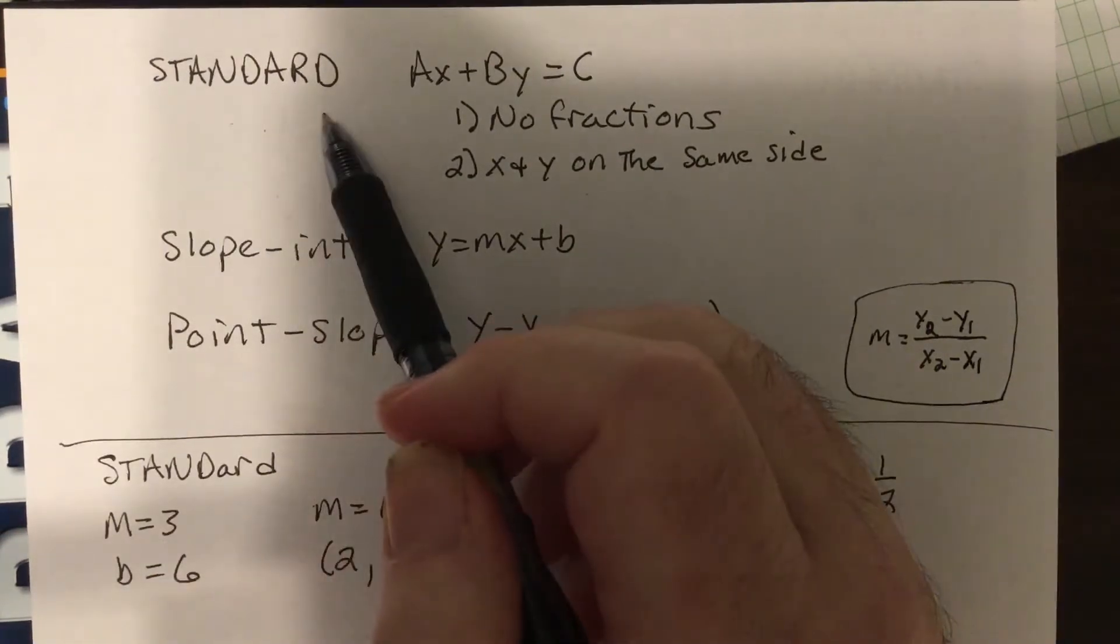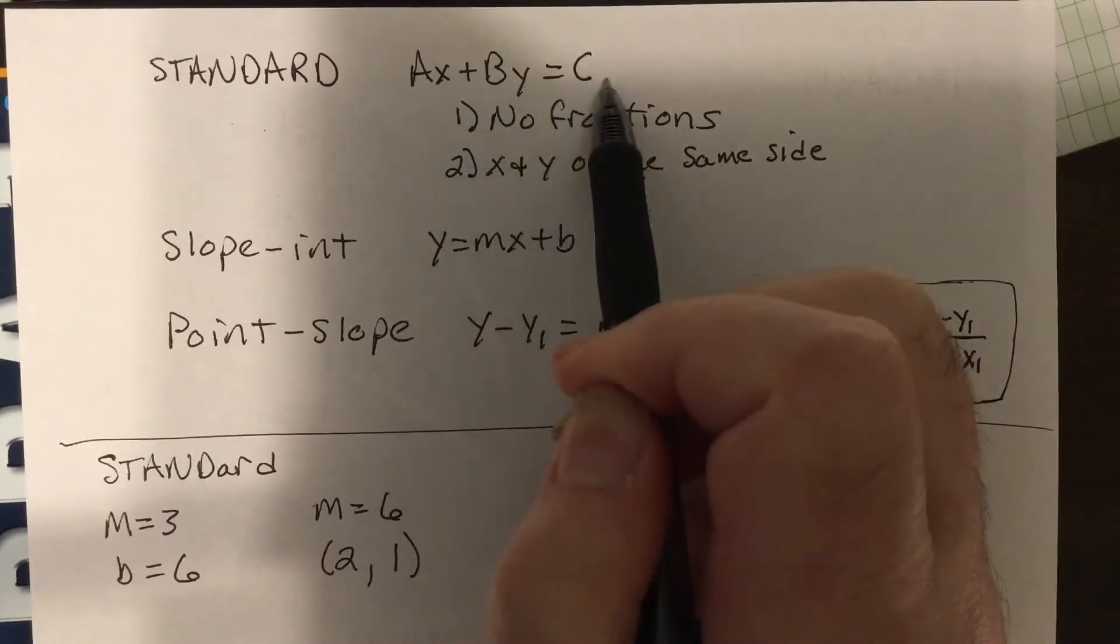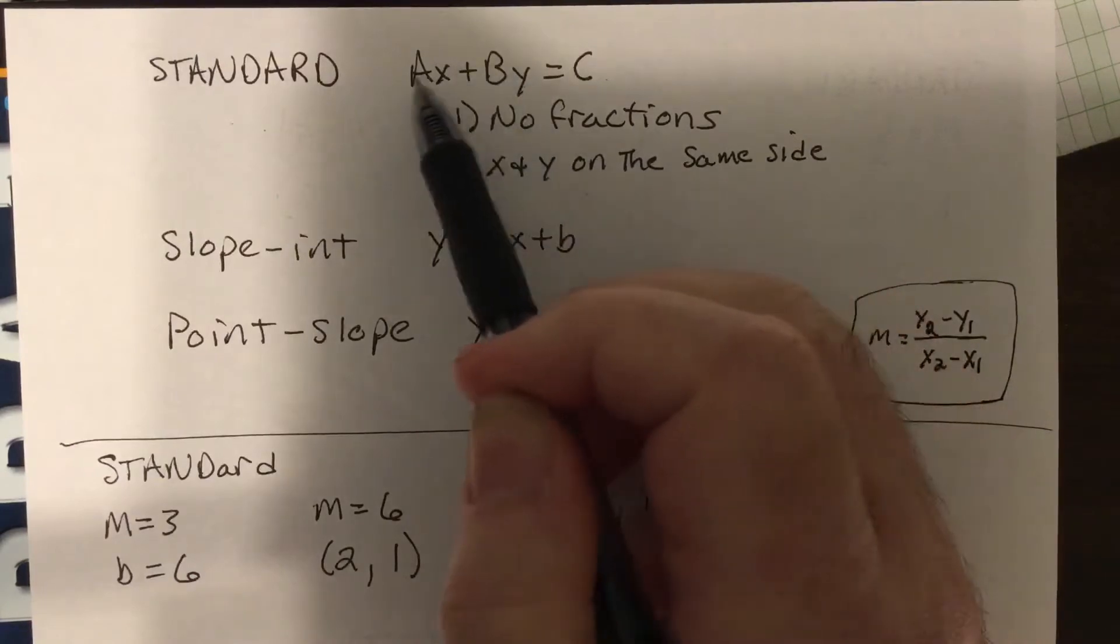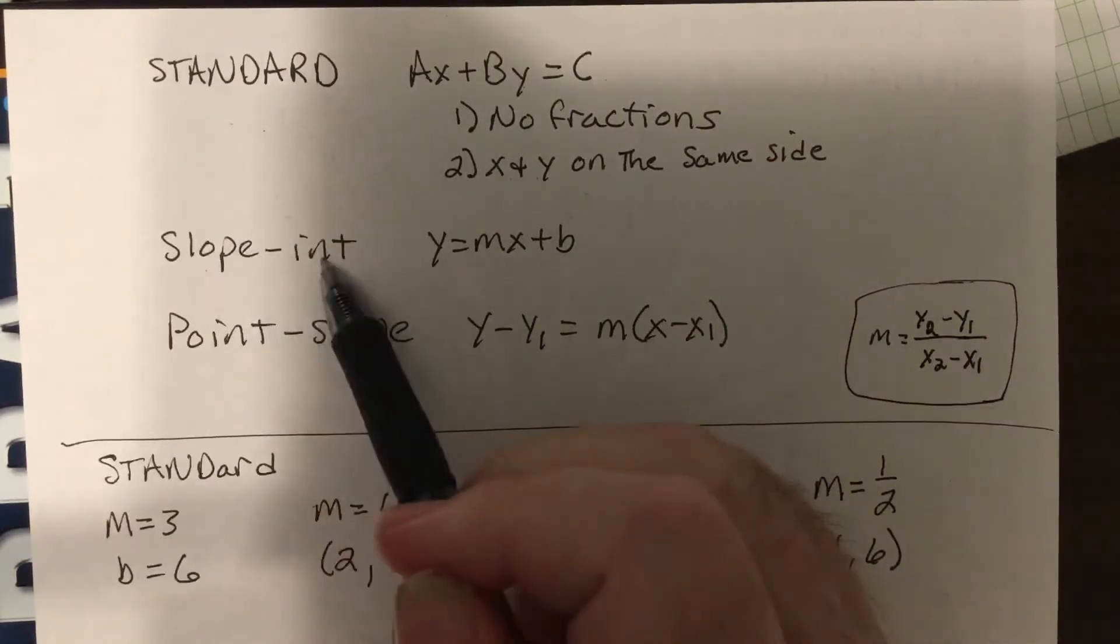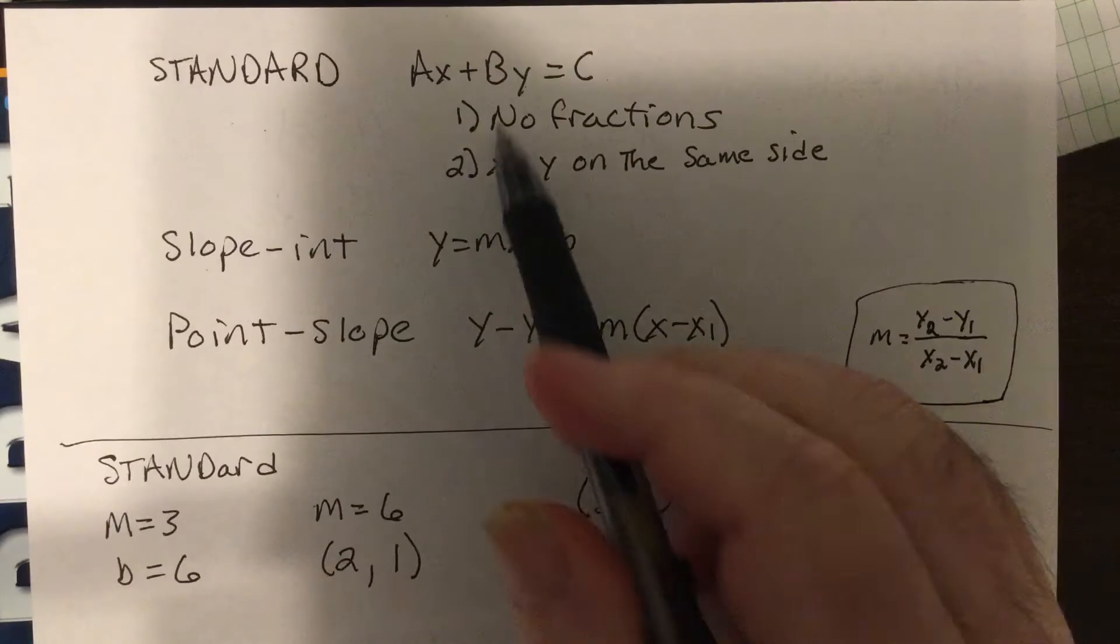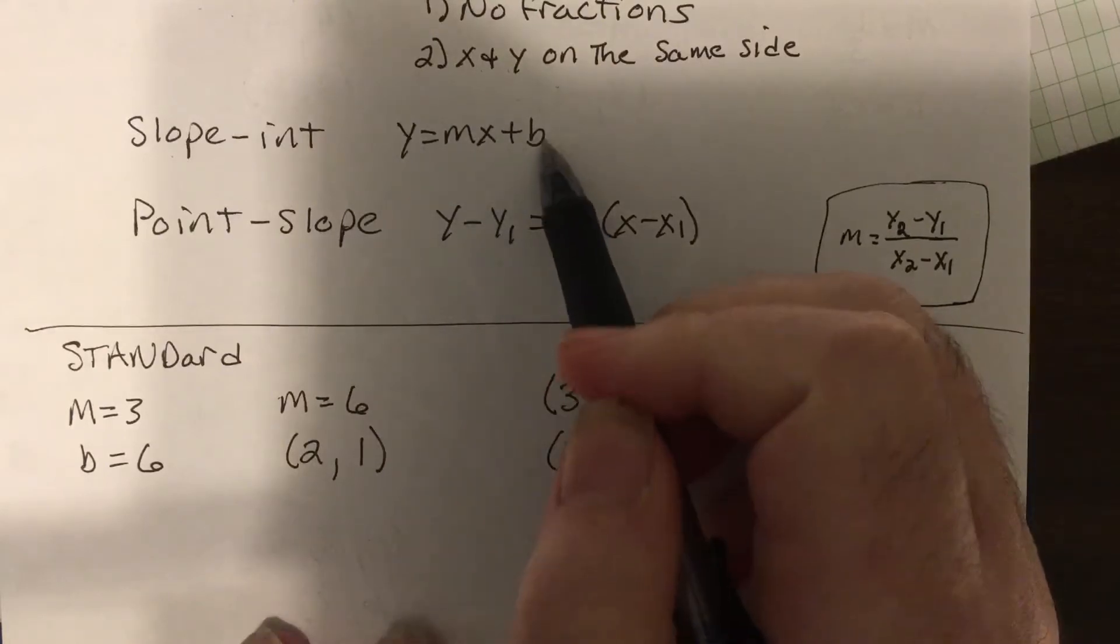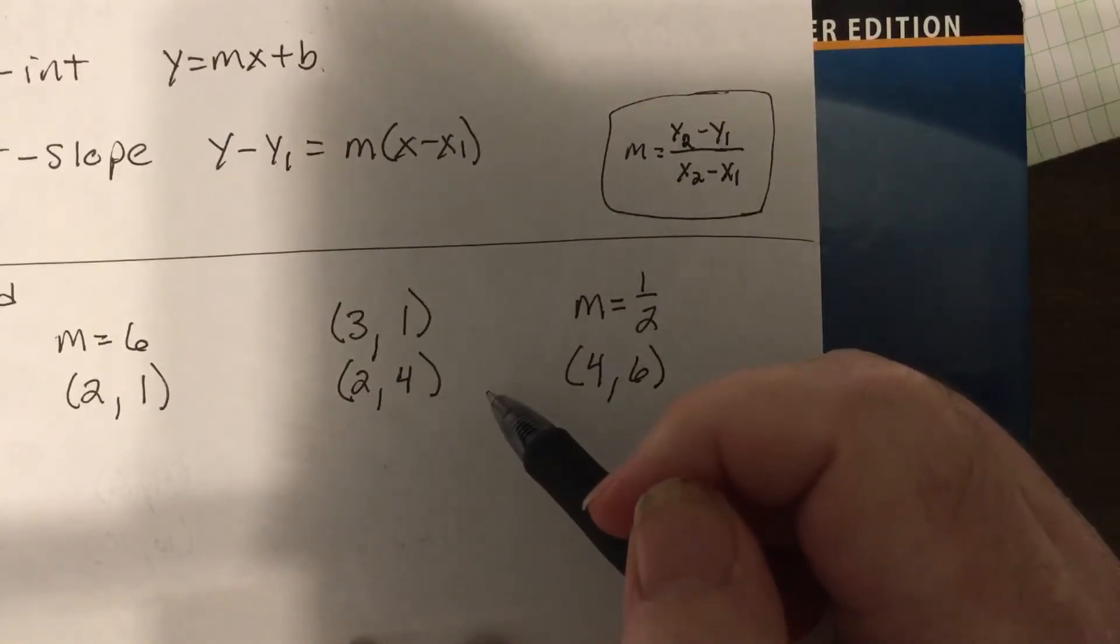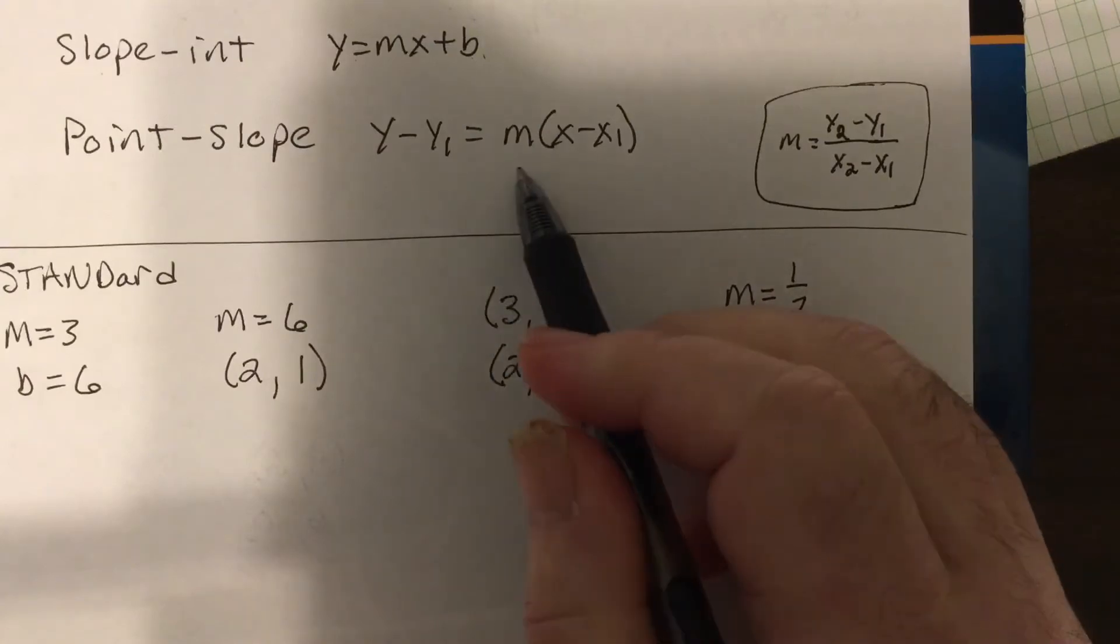Now, we have something called standard form. That's how they used to want the answer to look like, where you had a number x plus a number y equals a number. Can't have any fractions in the equation. That's just a little rule. And x and y need to be on the same side at the end. But with the advent of the graphing calculator, they went to slope-intercept, which has always been an equation, but they'd want the answer to look that way. Now, the technology is so advanced, it really doesn't matter which way you put the equation. But this is another one we use, slope-intercept, y equals mx plus b. And then the last one is they took the slope formula and cross-multiplied, which we'll talk more about when we get to percents. But that's where this equation comes from, where x1 and y1 is an ordered pair on the line, and m is your slope.